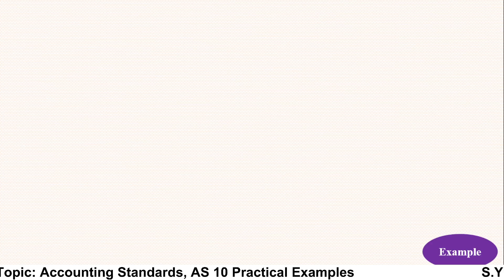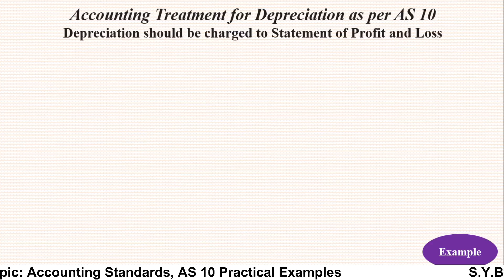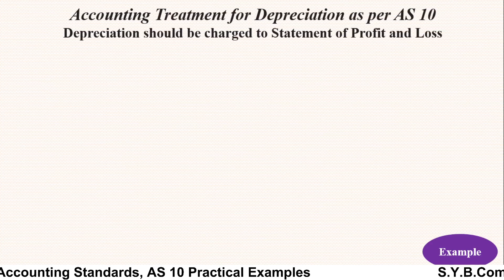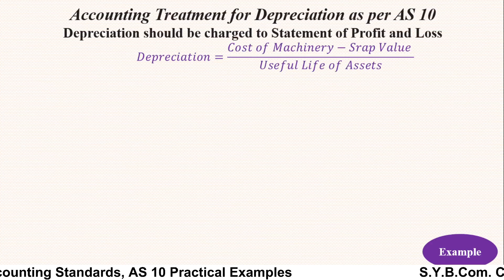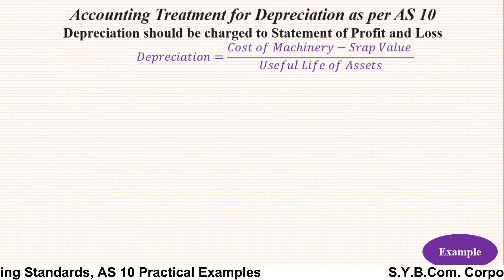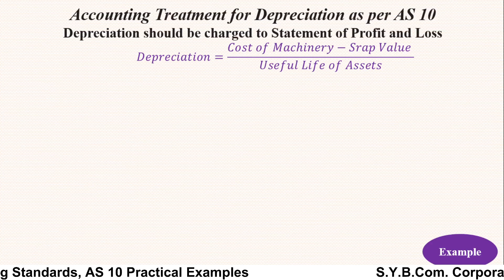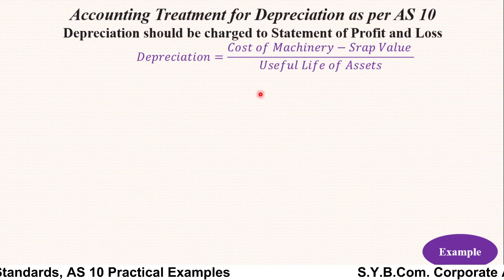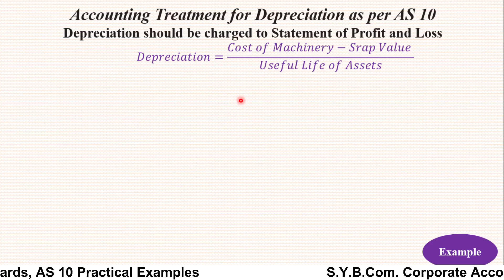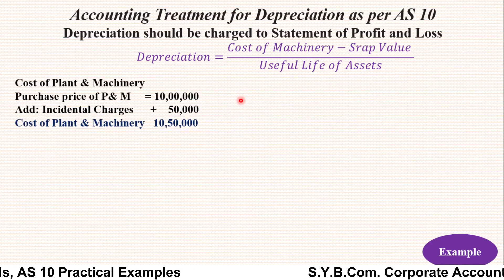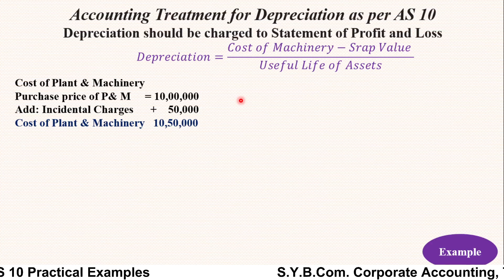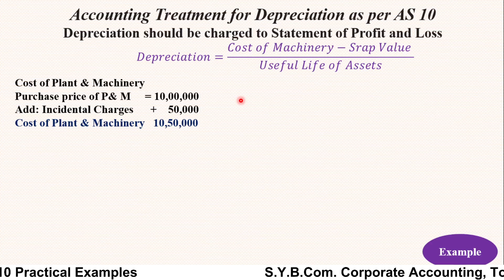Here is the solution for Accounting Standard 10, AS10 PPE. The accounting treatment for depreciation as per AS10: depreciation should be charged to the Profit and Loss Account. The formula is very straightforward — Depreciation = (Cost of Machinery − Scrap Value) ÷ Useful Life of Asset. The useful life of the asset has to be estimated; here we have estimated it as five years.